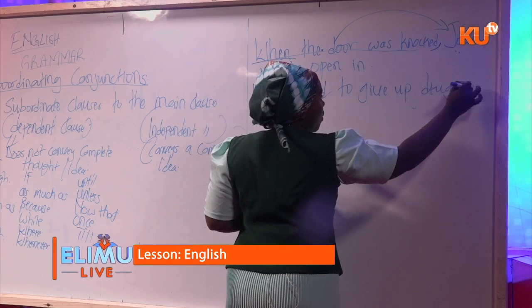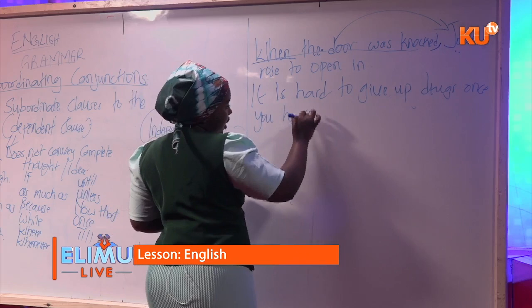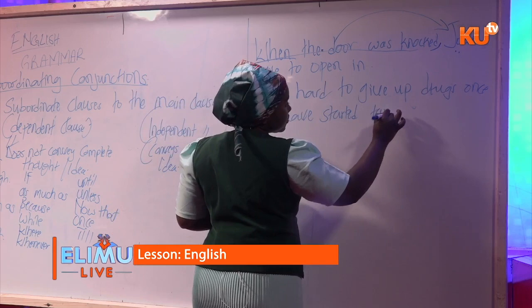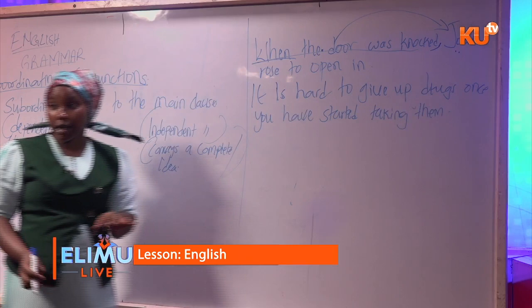We can also have: 'It is hard to give up drugs once you've started taking them.' Here, 'once' is the subordinating conjunction connecting the two clauses.